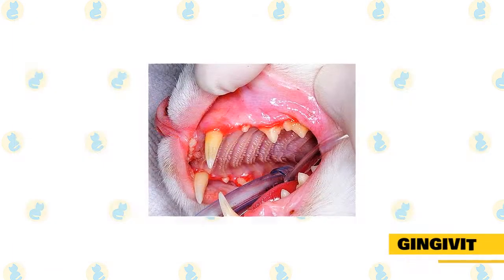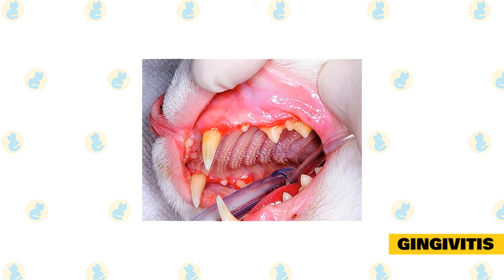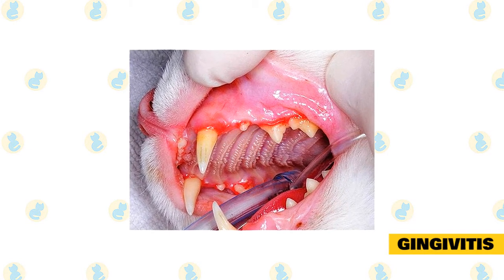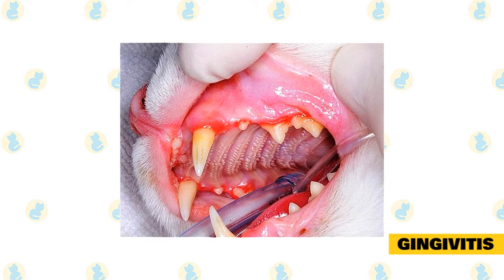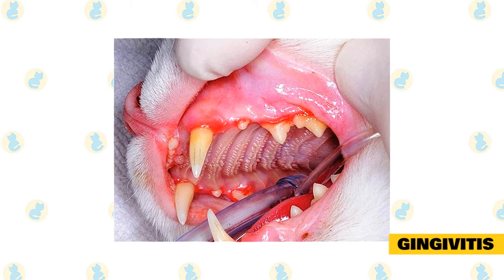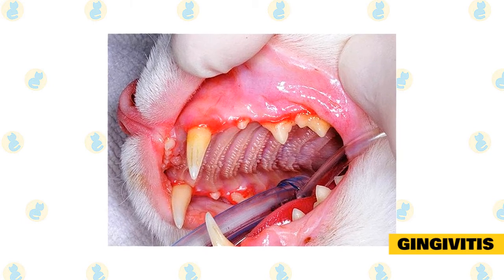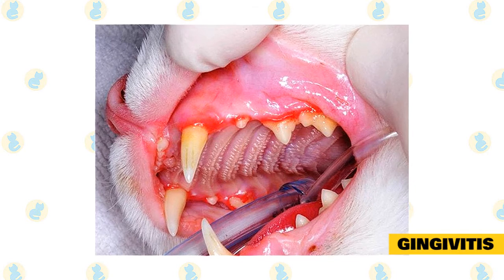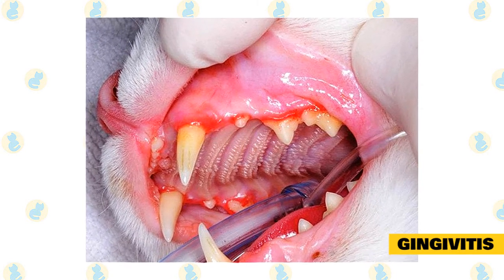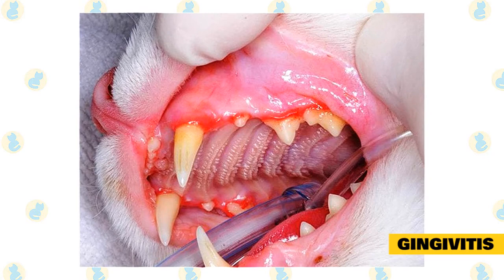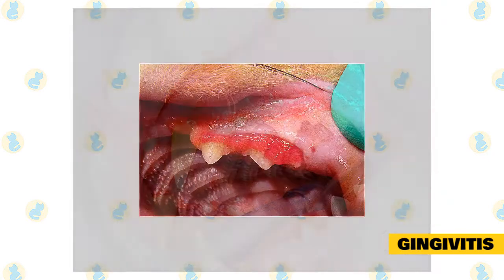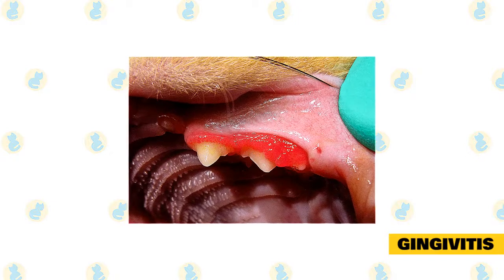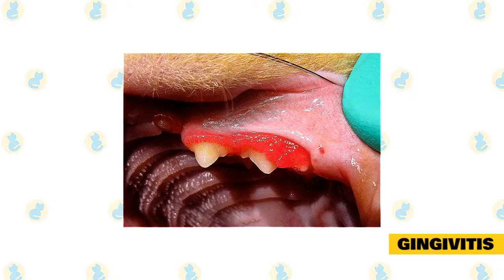Gingivitis is a condition in which the gums around the teeth become inflamed, red, swollen, and painful. This inflammation is usually the result of a process that begins with the buildup of plaque, a film that harbors bacteria on the teeth. In cats with good oral health, the bacteria in this film are believed to be beneficial, and the plaque accumulates above the line where the base of the teeth meets the gums.